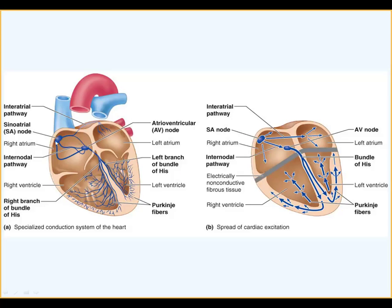The SA node — sinoatrial node — generates the highest rhythm. The impulses generated there will depolarize the right atrium and travel to the left atrium, depolarizing it as well. This is the first site for the generation of your rhythm.